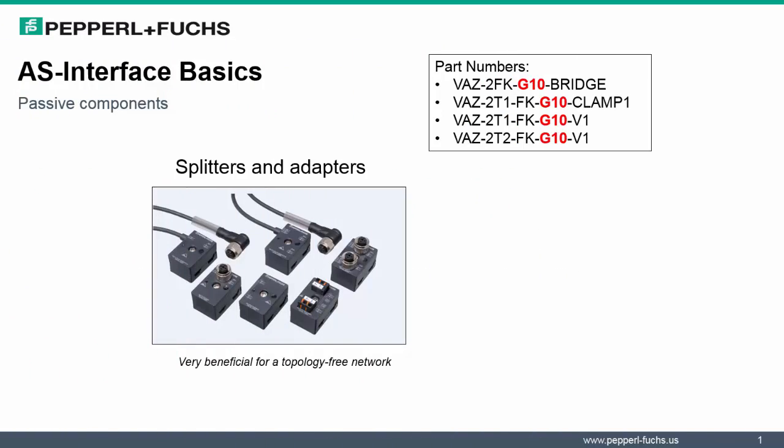Since we spoke about the openness of the network topology, I wanted to make you aware of the passive components available with AS Interface. We have a number of splitters and adapters in the G10 mounting style that are very beneficial when setting up your networks. These passive components don't have any addresses associated to them, however require an AS Interface intelligent slave to be connected to them.